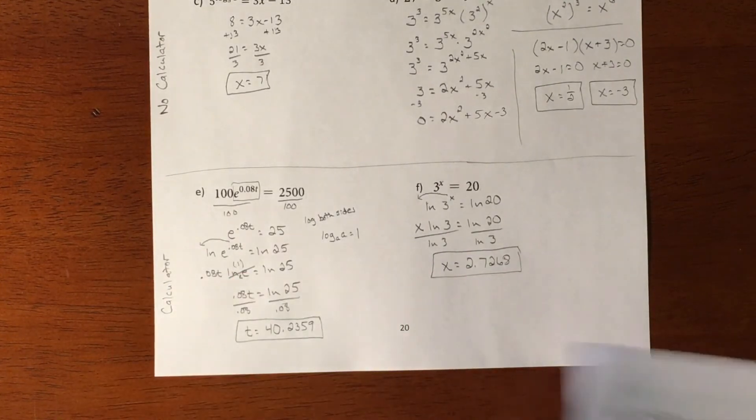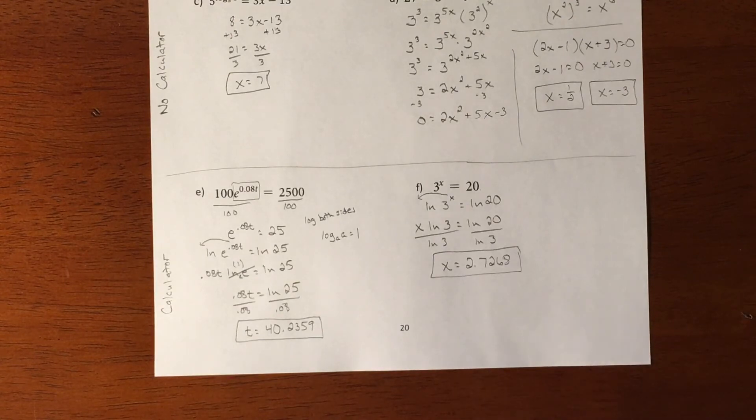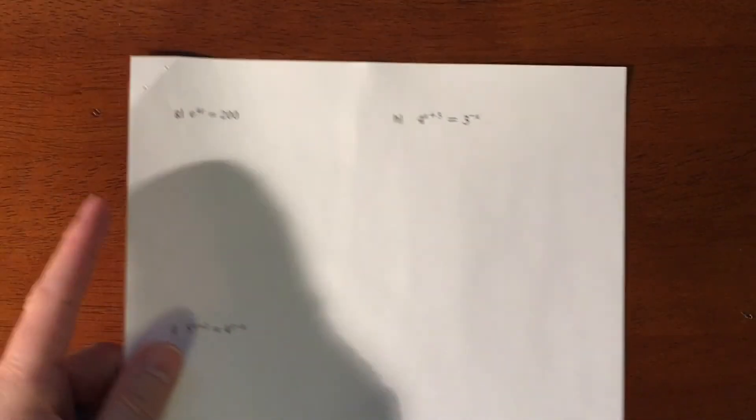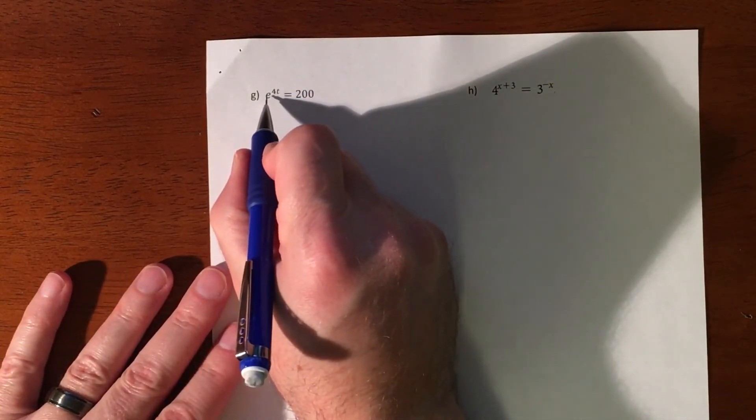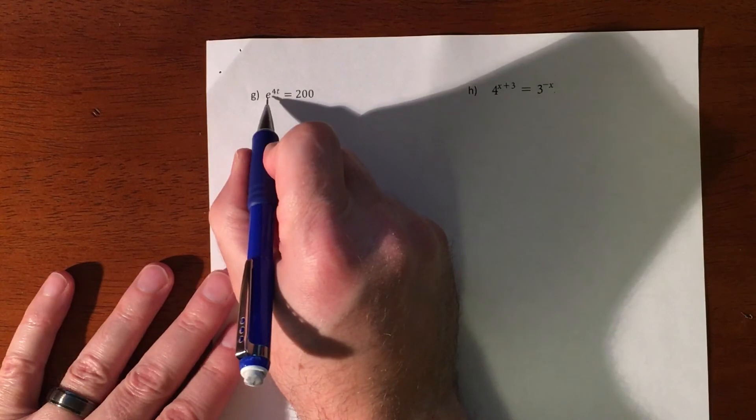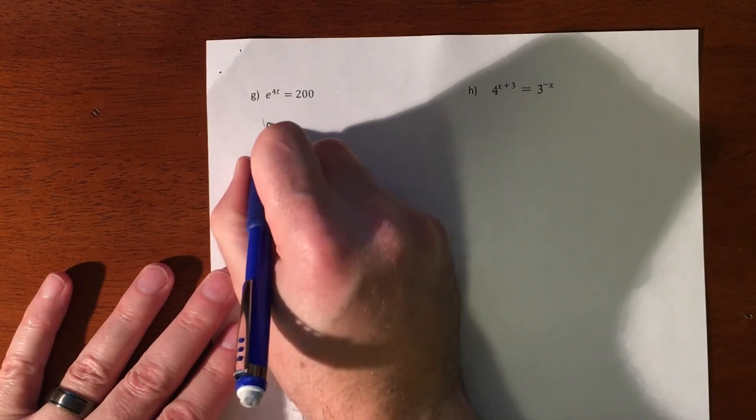All right. And then we'll do one more. So, same thing, even nicer because rather than the three on the last one, we have an E on this. So we'll natural log both sides.